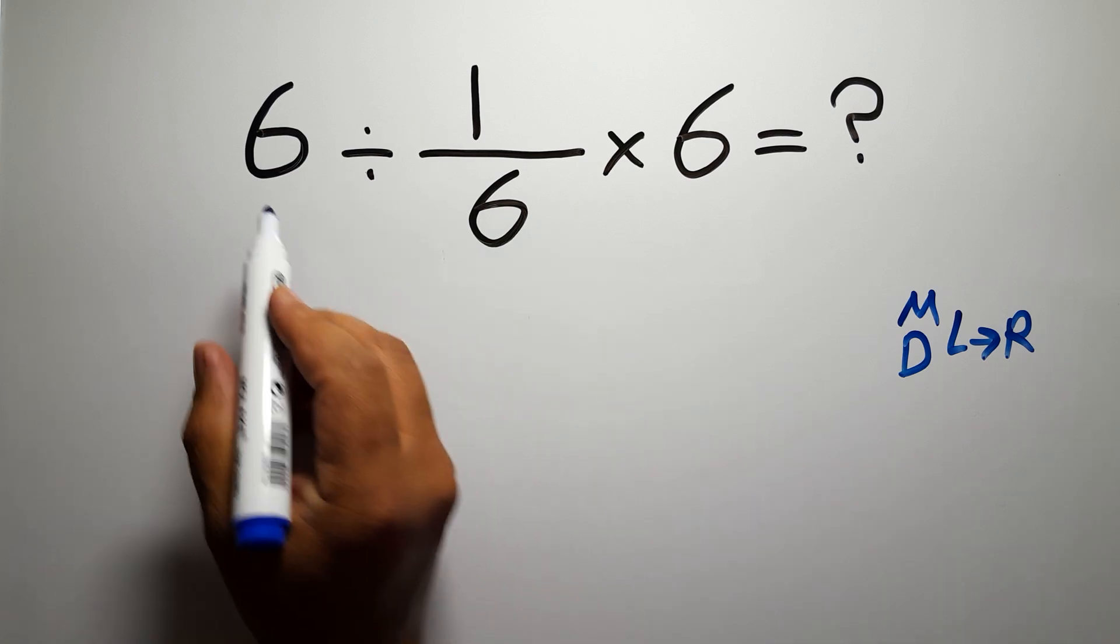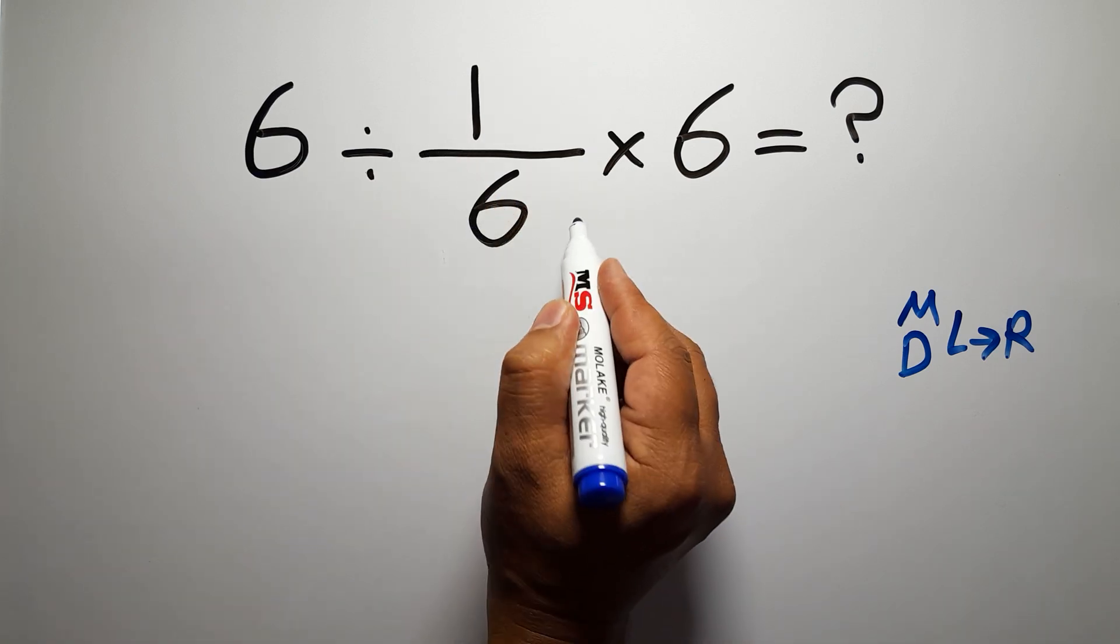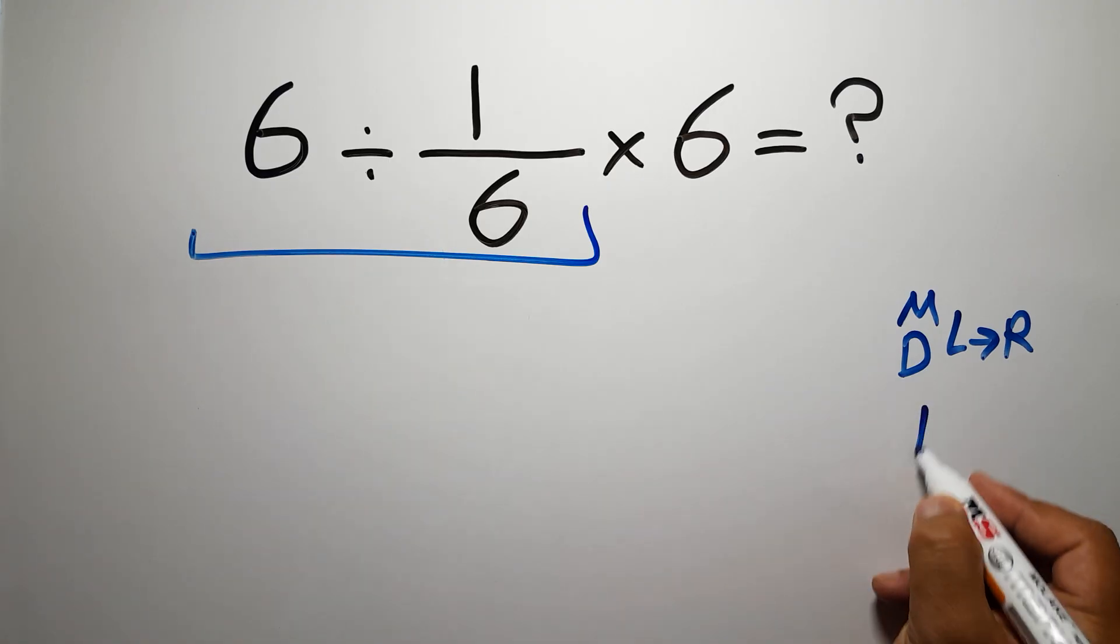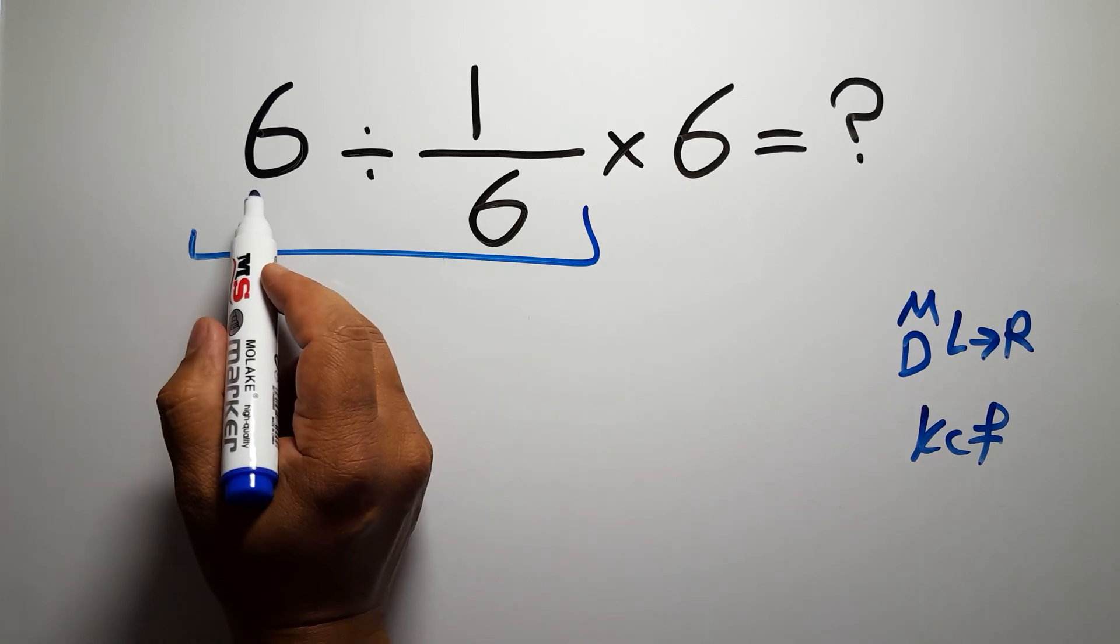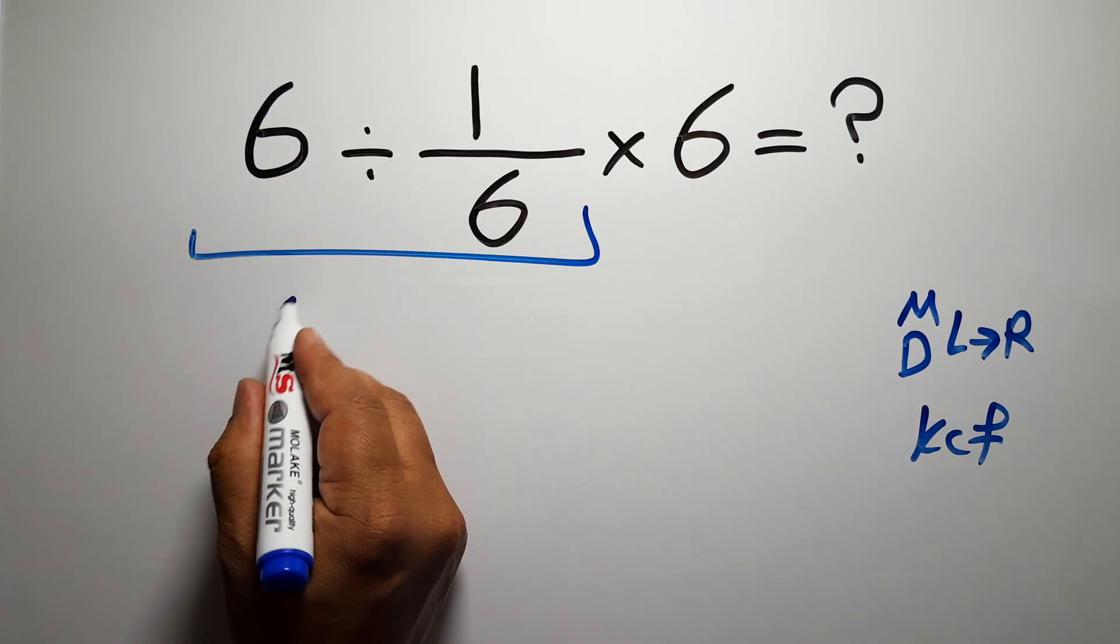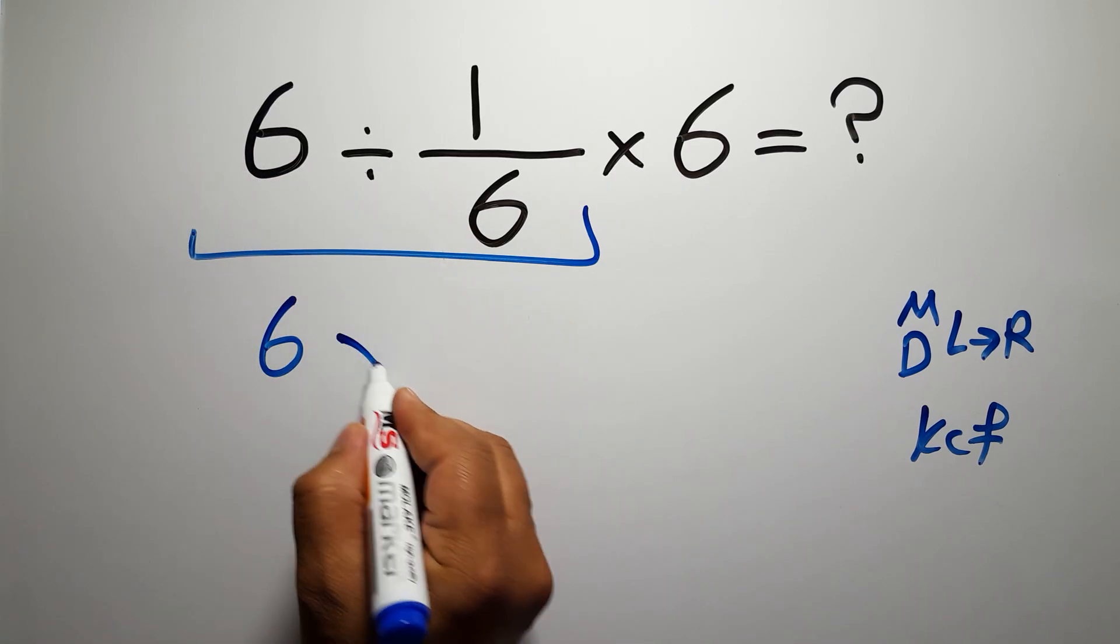So first, 6 divided by 1 over 6. According to the KCF rule: K stands for keep, C stands for change, and F stands for flip. We can write: keep the first fraction, change division to multiplication.